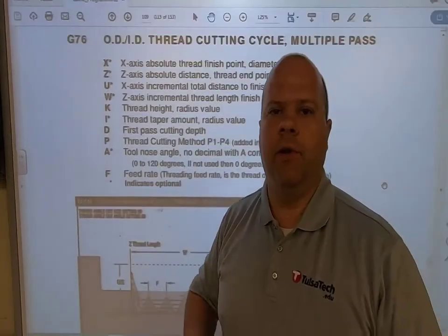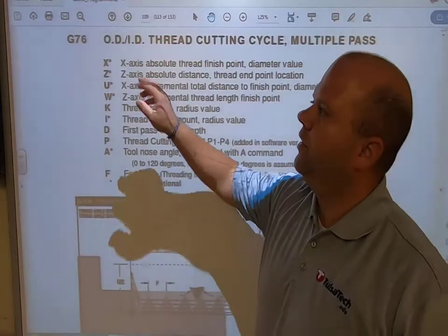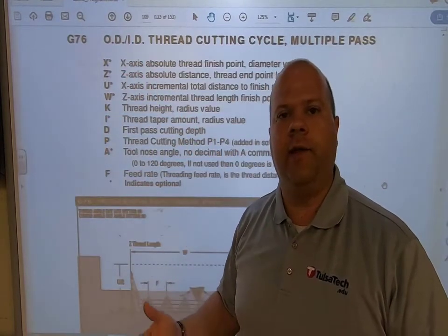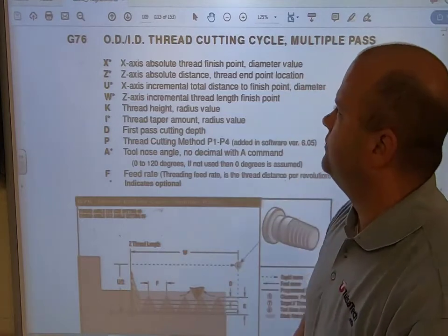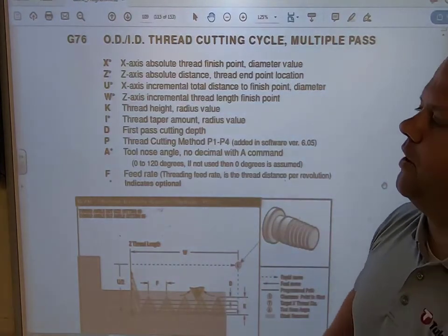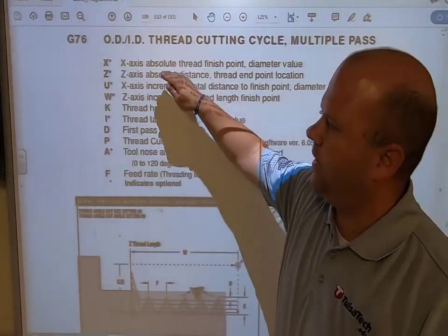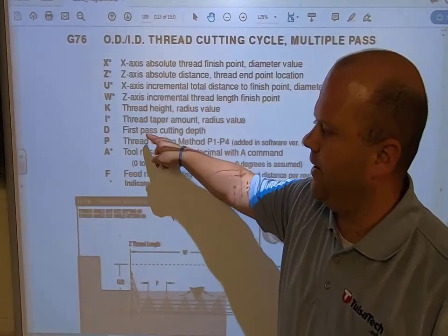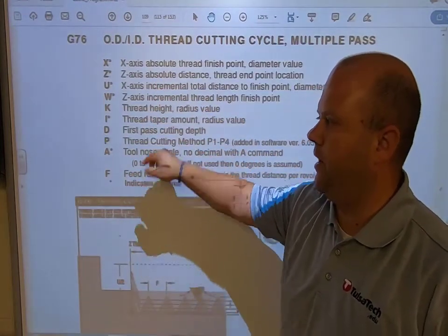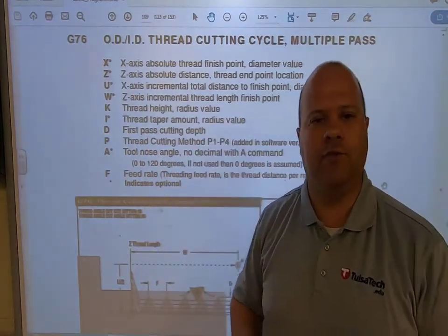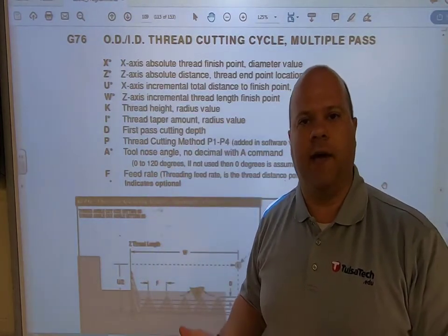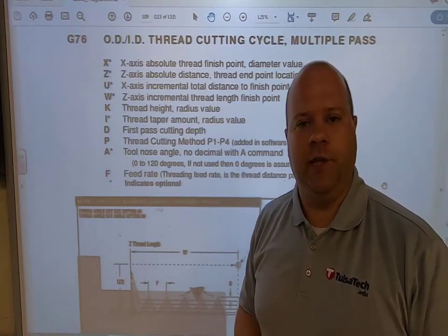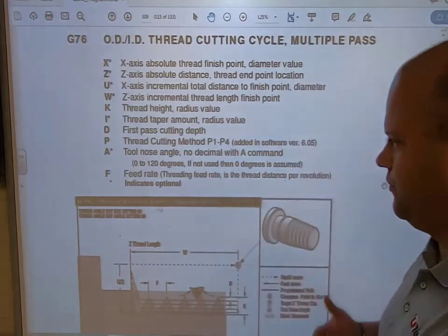Hi guys, this is Aaron Rupp and what we're going to do today is go over how to use the G76 for OD thread canned cycles. The things I want to focus on are X, Z, K, D, and F. Now there are a lot of values we can use when making a thread canned cycle, but we're going to focus on just a few because that's all we'll need to make our thread.